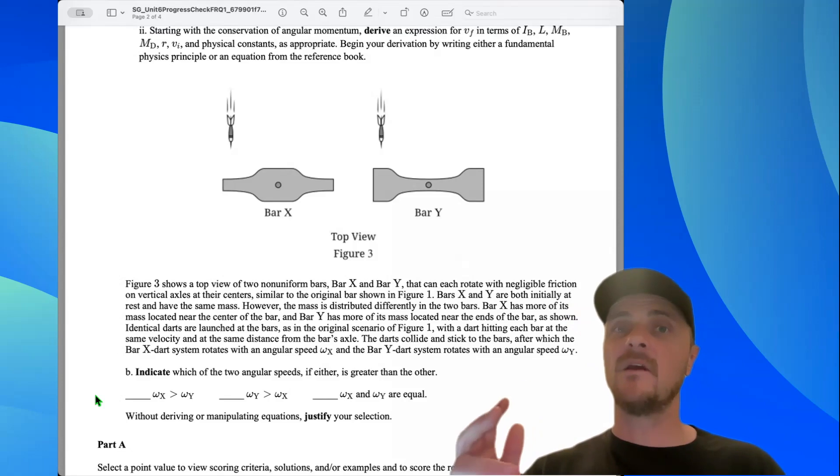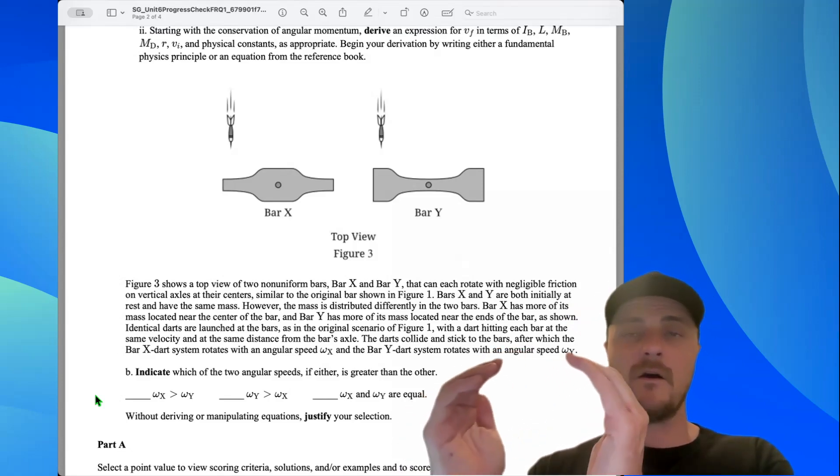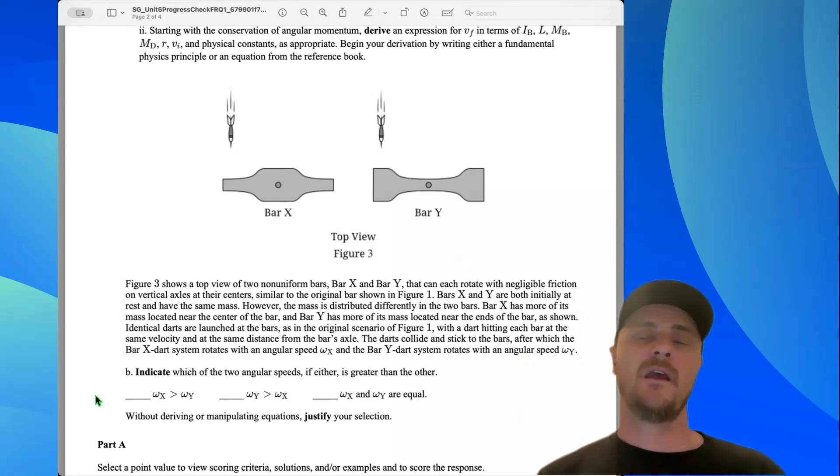And for angular momentum to be conserved with a smaller rotational inertia, comma, bar X must spin with a greater angular velocity, and in parentheses write omega x, period. And you could go on to compare bar Y. You could say bar Y has more of its mass to the outside, therefore it has a greater rotational inertia, and in order for angular momentum to be conserved, bar Y would have to spin slower. But I don't think you need to say all that Y stuff. You can end your justification at bar X. That should be fine.